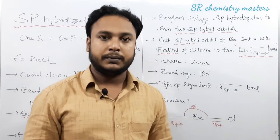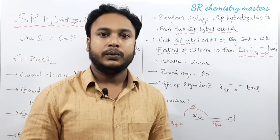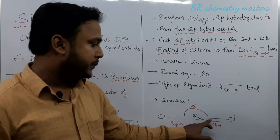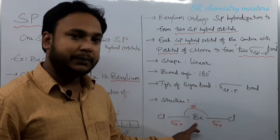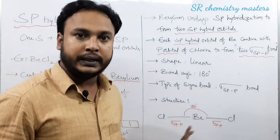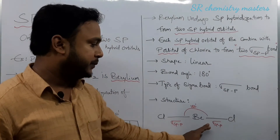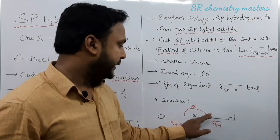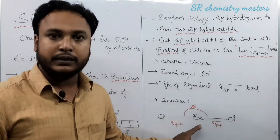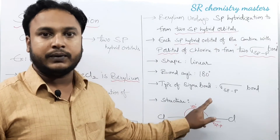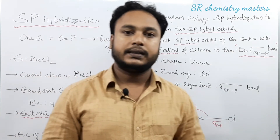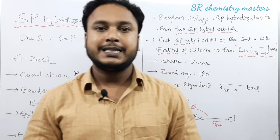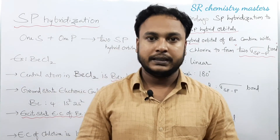Looking at the structure of BeCl₂: two sigma bonds are formed between beryllium and the two chlorine atoms. The type of sigma bond is the sigma sp-p bond, the bond angle is 180 degrees, and this is the structure of BeCl₂ in which SP hybridization is present.